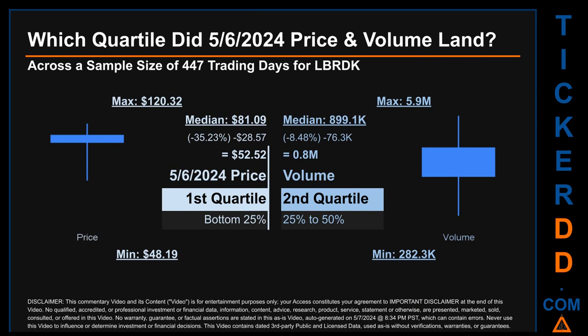Hello, my name is Maria. Which quartile did the 6th of May 2024 price and volume land? Across a sample size of 447 trading days, the maximum end-of-day price for LBRDK was $120.32 while the minimum was $48.19. The 6th of May 2024 price of $52.52 landed within the first quartile, meaning it was within the bottom 25% of all sampled end-of-day prices.